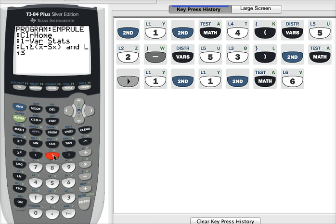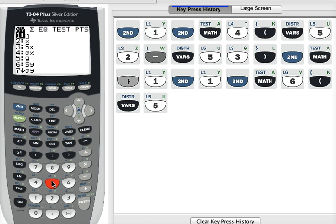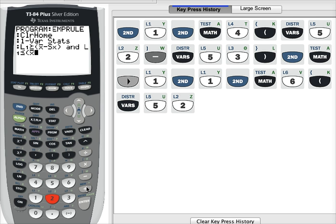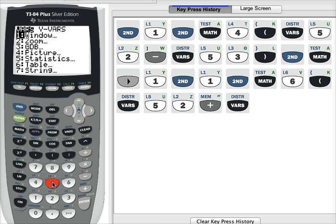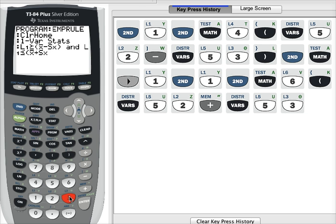Open my parentheses. The mean variables, option number 5, option number 2. Plus a standard deviation. So plus variables, option number 5. The standard deviation is option number 3. Close my parentheses.